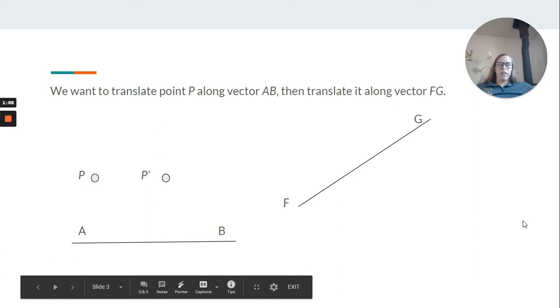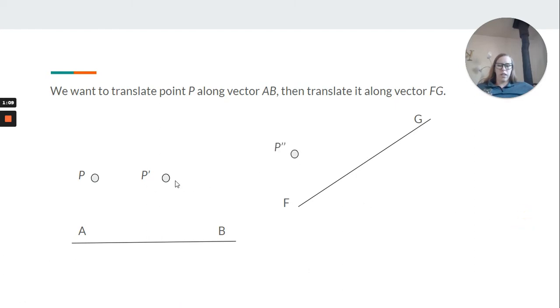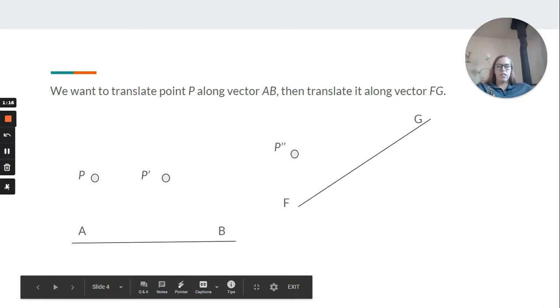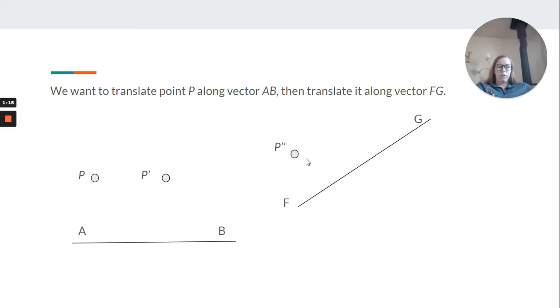Now we're going to translate it along vector FG. So it gets moved up. It could just get moved here too. Doesn't matter. So along vector FG. We just translated it twice, creating a sequence of translations.